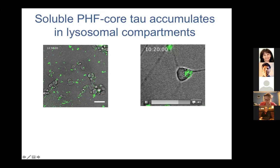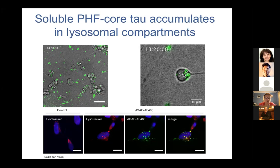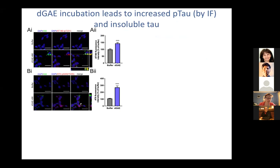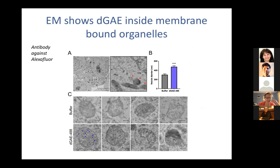Not too surprisingly, it seems that DJE accumulates and is deposited within lysosomal compartments. We also noticed that DJE incubation leads to an increase in what's been thought of as the pathological form of tau — phosphorylated tau — and we can also see more insoluble tau in these samples.